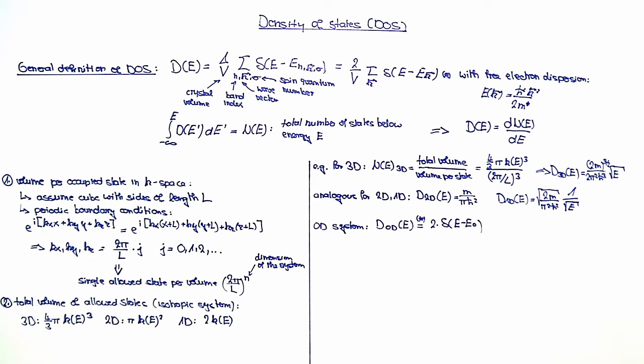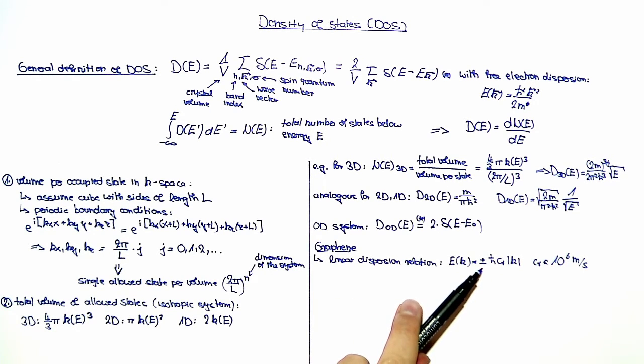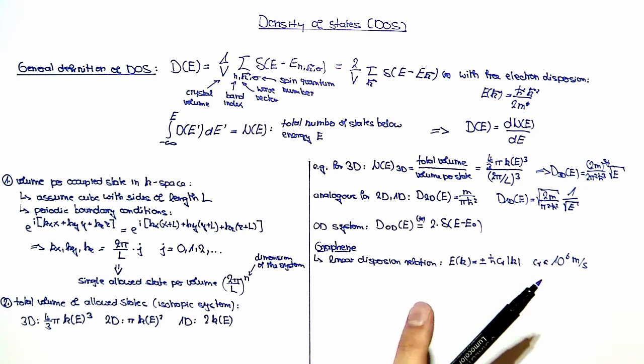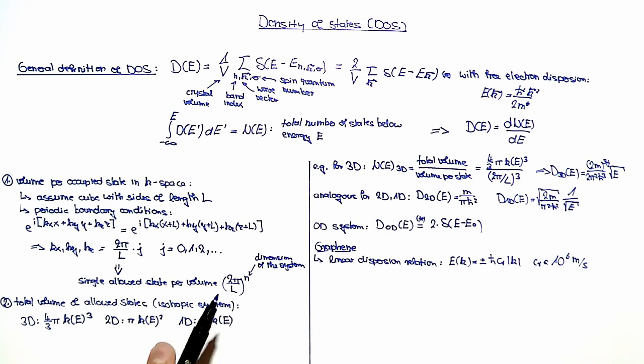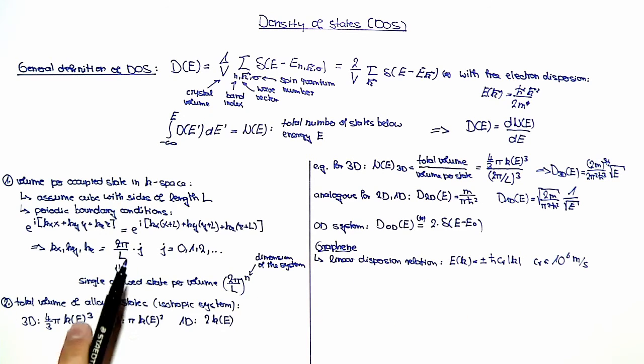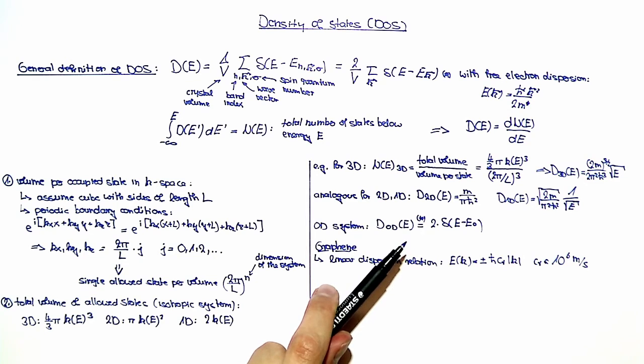In the second part of the exercise, we are asked to calculate the density of states for the case of graphene. We are given the dispersion relation for graphene, which reads as follows. We have this linear dispersion relation where the plus stems from the valence band and the minus from the conduction band. This constant c-star is called the Fermi velocity and is about 10^6 meters per second. Using the equations for a two-dimensional system and the dispersion relation, we can calculate the density of states for graphene exactly as for the free electron case.